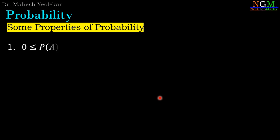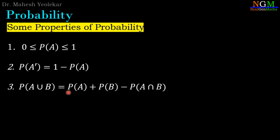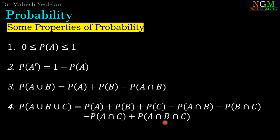Some important properties of probability. First property: 0 ≤ P(A) ≤ 1, meaning the minimum value of probability is 0 and maximum value is 1. Second property: probability of A' (complement of A) equals 1 minus probability of A. Property 3: P(A∪B) = P(A) + P(B) − P(A∩B). And P(A∪B∪C) = P(A) + P(B) + P(C) − P(A∩B) − P(B∩C) − P(A∩C) + P(A∩B∩C).